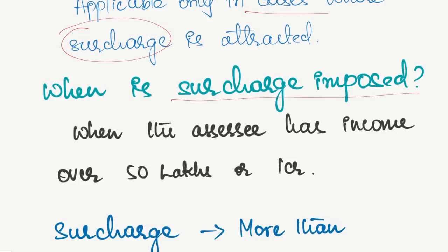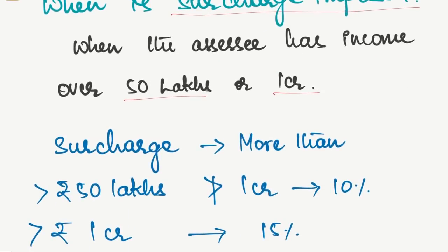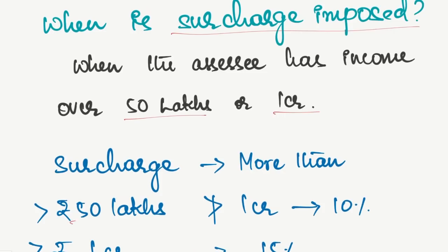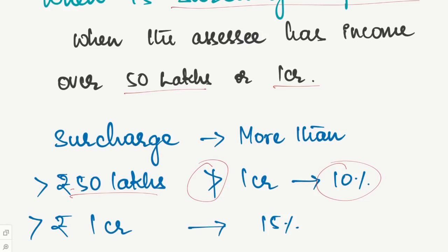For an individual assessee, if the income has exceeded 50 lakhs or 1 crore, then surcharge is applicable. If the income has exceeded 50 lakhs but not 1 crore, the surcharge applicable is 10%. If it exceeds 1 crore, the surcharge applicable is 15%. In brief, surcharge is nothing but tax on tax — an additional tax on top of the slab rate tax.